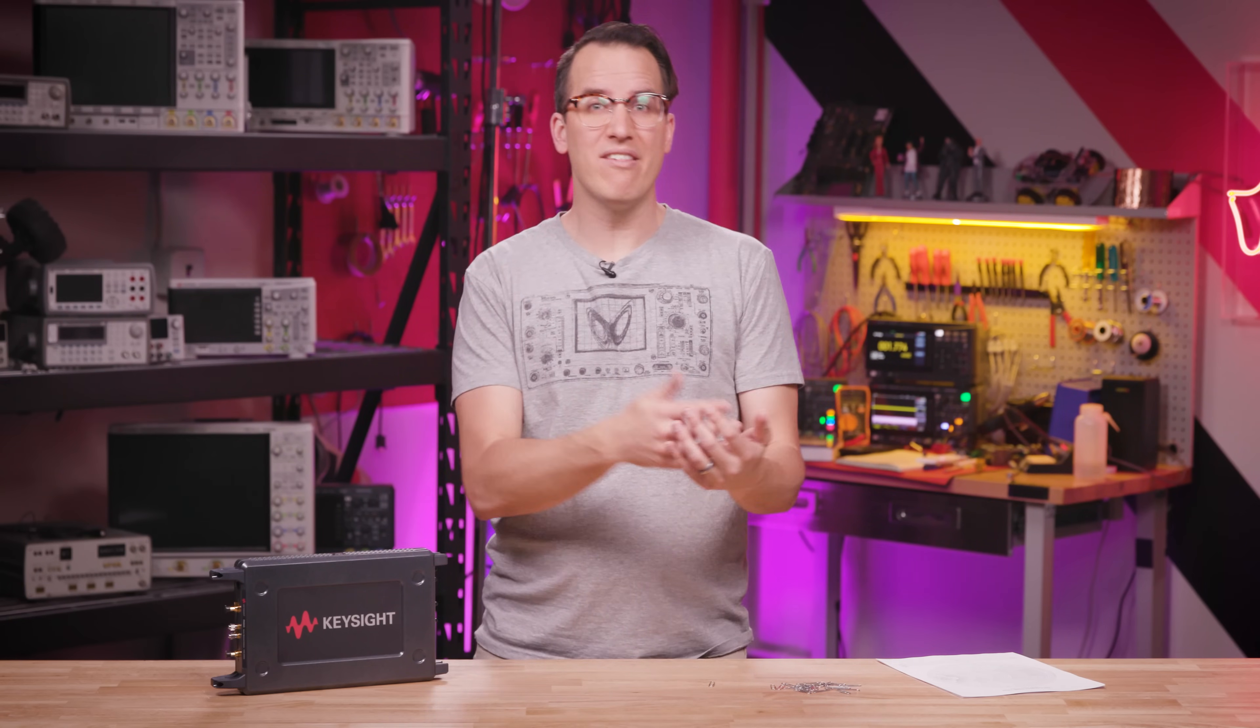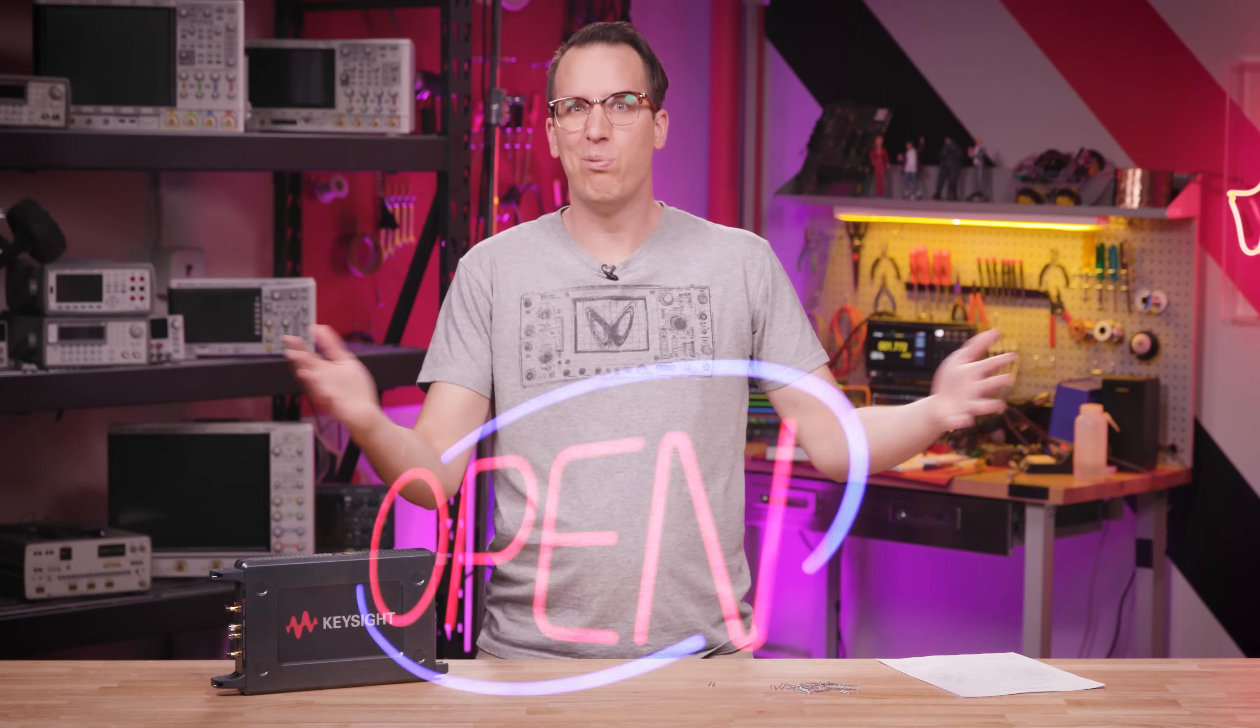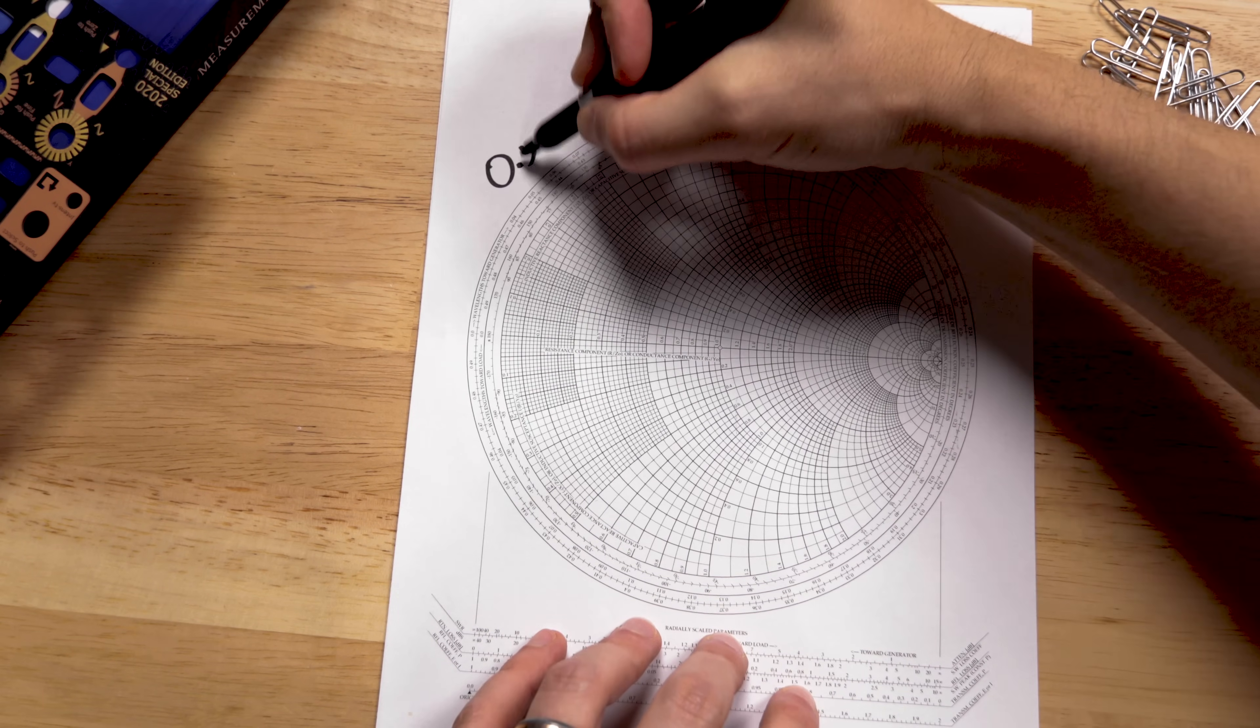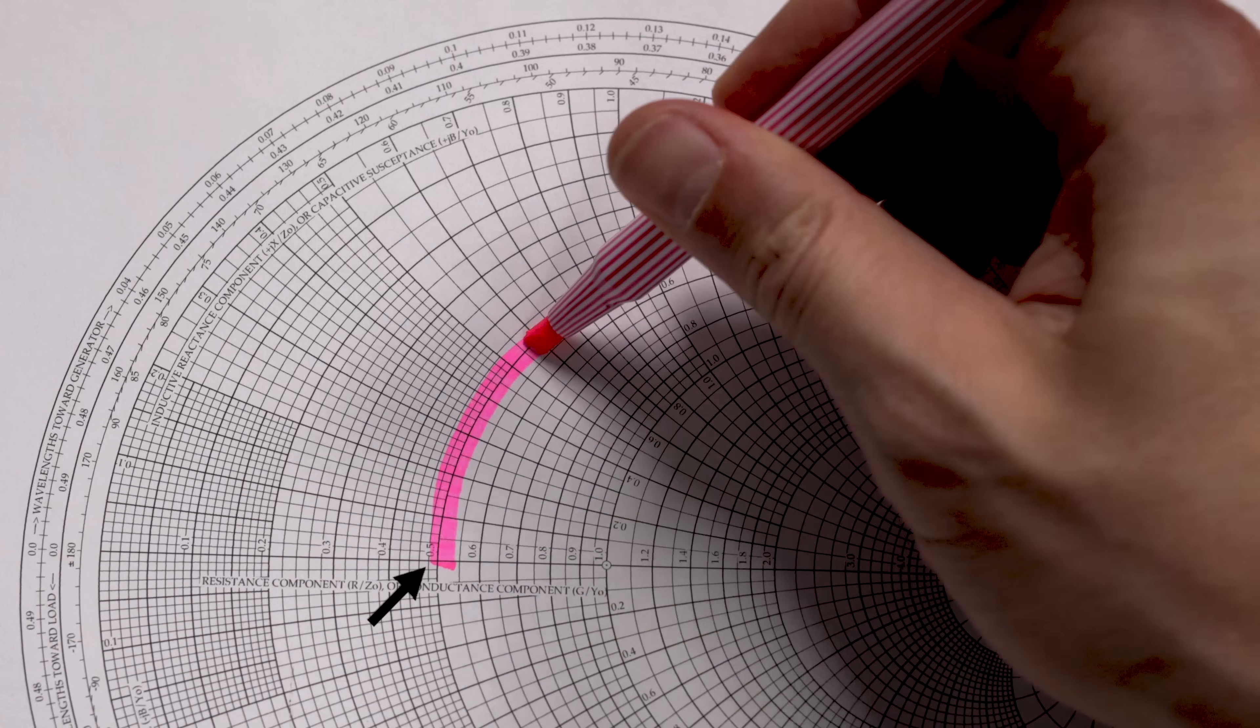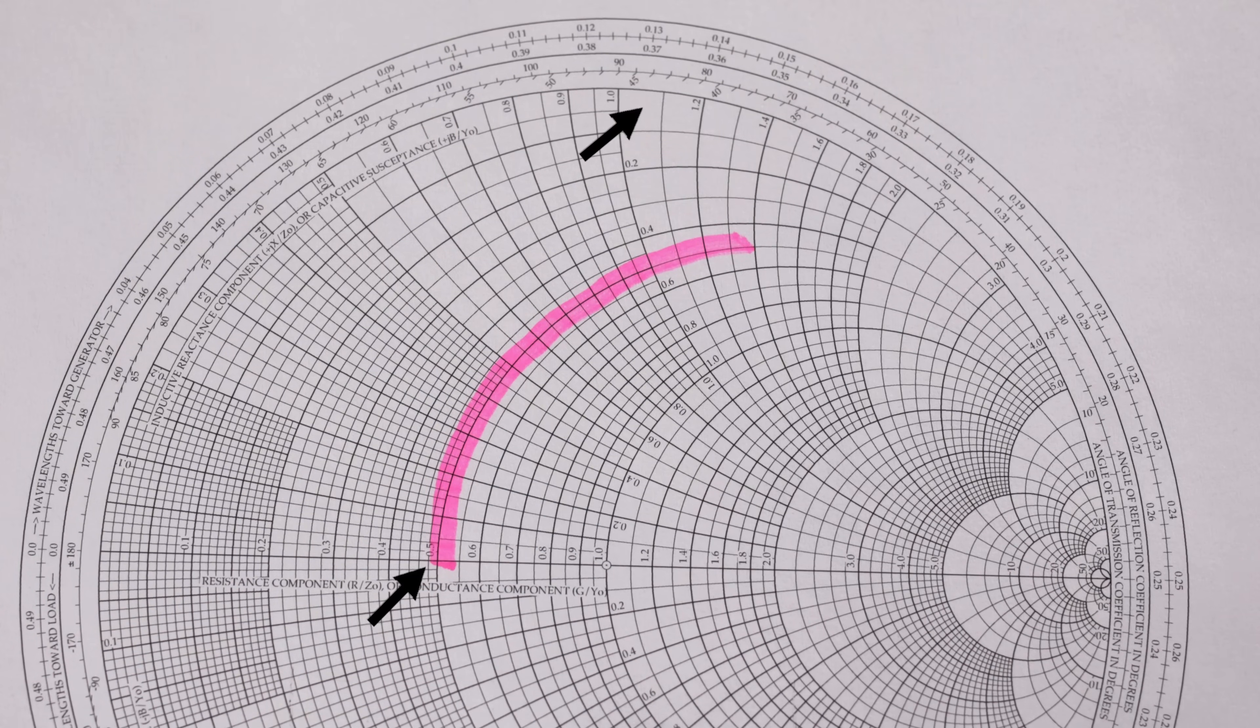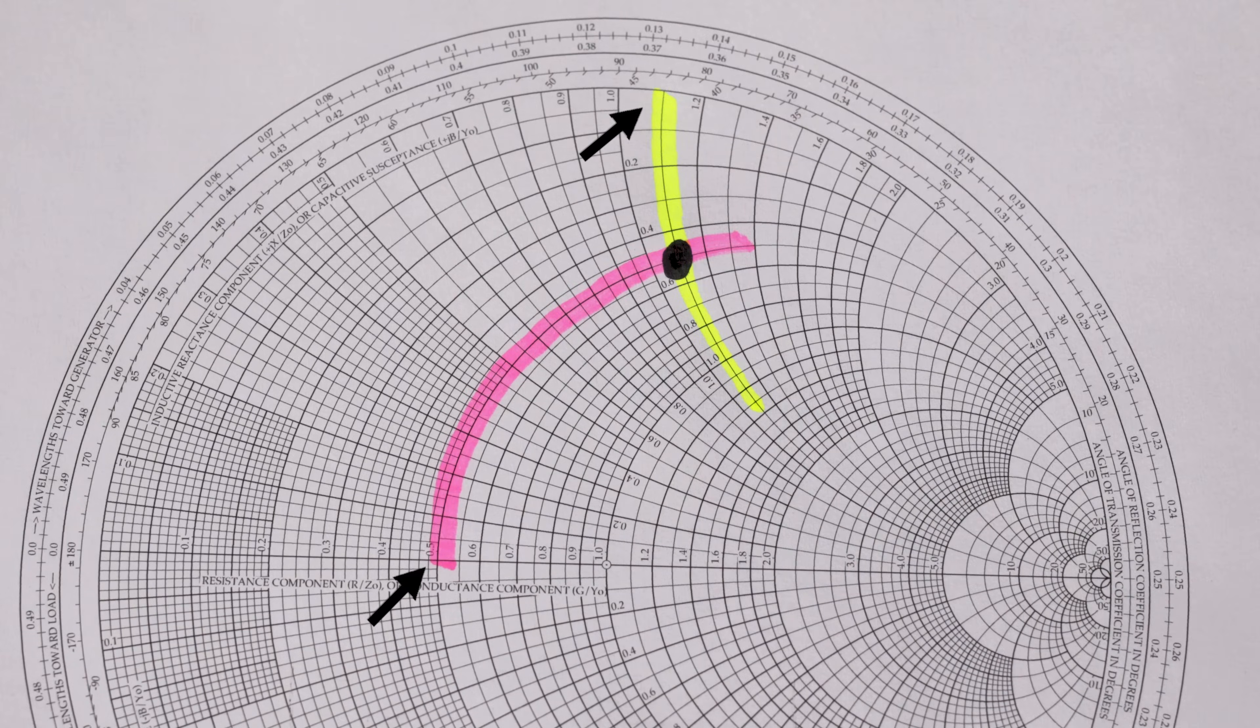And an open circuit is infinite resistance. Infinity is not some weird edge case for electronics. Open circuits are everywhere. So to plot the same 0.5 plus j 1.1 on the Smith chart, we do the same thing we did before. We find 0.5 on the real axis, and 1.1 on the imaginary axis, and draw a spot where they meet. It's Algebra 1, but it'll impress and confuse all the business majors.